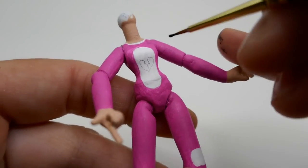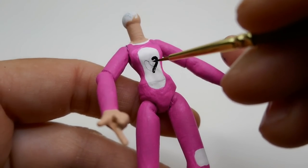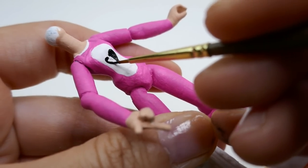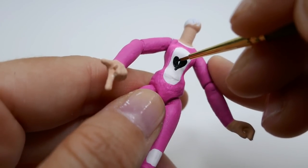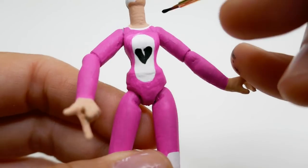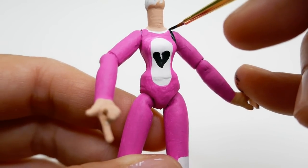Here on the chest, we're going to draw a broken heart using black and paint some black stripes around her shoulders.